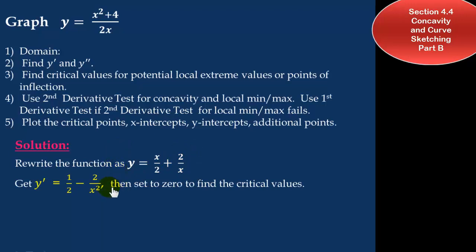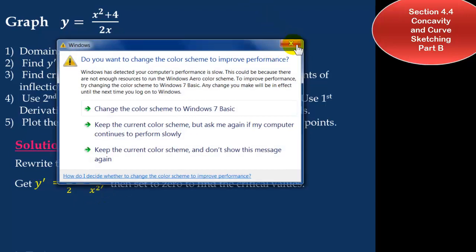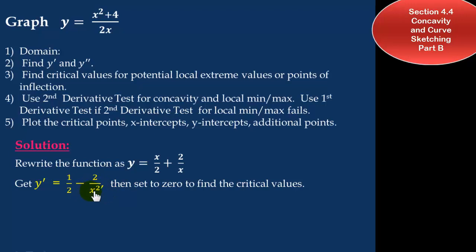Taking the first derivative and setting it equal to 0 to find the critical values: the first derivative of x over 2 is just 1 half; the first derivative of 2 over x is negative 2 over x squared, because the exponent negative 1 brings down a negative and leaves x to the negative 2 in the denominator. Setting this equal to 0, we need 1 half minus 2 over x squared equals 0, which means x squared equals 4, so x equals plus or minus 2.